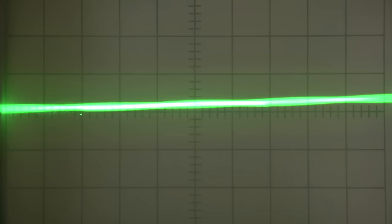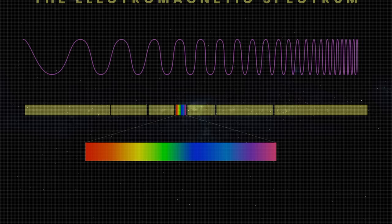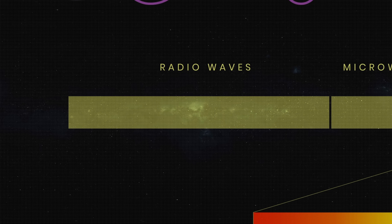It is helpful to understand radio waves before we start talking about signals from space. Radio waves, just like light waves, are part of the electromagnetic spectrum, and all electromagnetic waves travel at the speed of light, which is a blistering 186,282 miles per second.